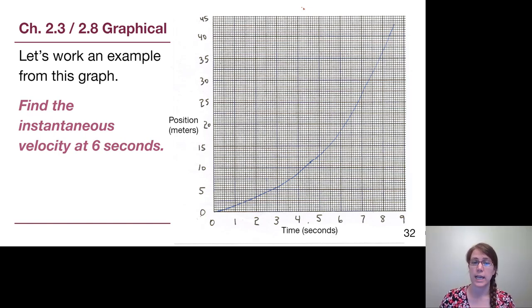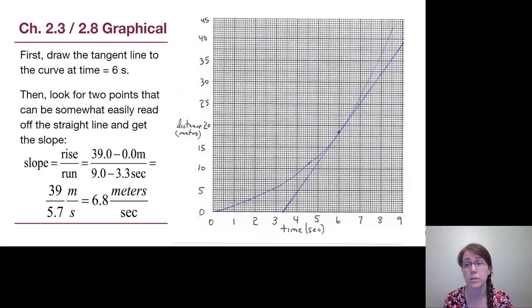If we want to find the instantaneous velocity at 6 seconds, we must draw a tangent line first. Far too many students decide that we go to 6 seconds and we see that the position at that moment in time looks to be maybe 17.5 meters and then they just take that position divided by the time, which completely ignores the idea of what velocity cares about. A position at a single point in time is not the same thing as the idea of displacement. We must draw a tangent line first and then find two points on that tangent line and plug into our understanding of slope.